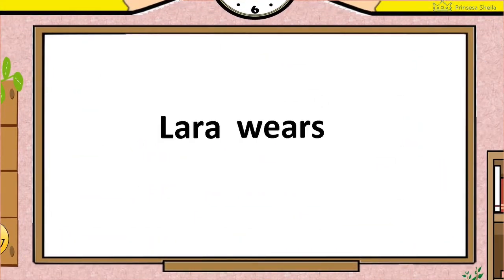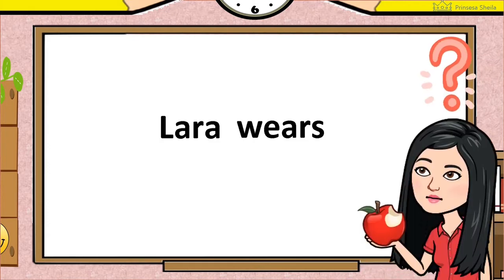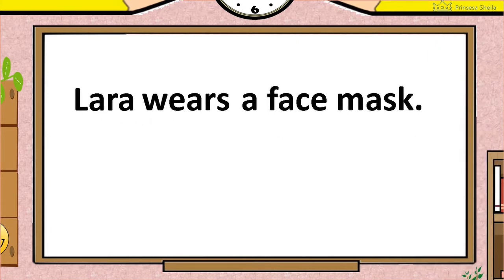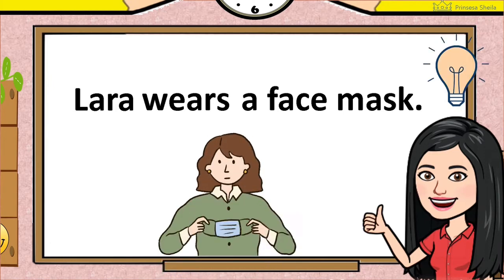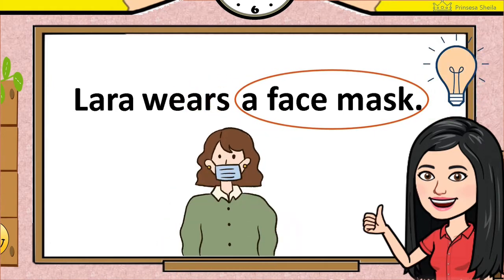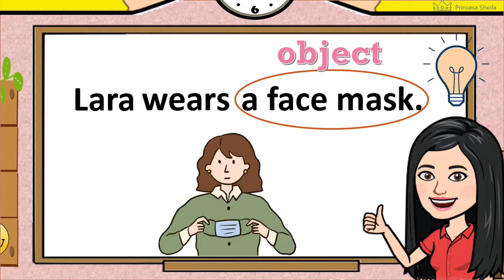Take a look at this. Lara wears. Is the thought complete? No. There is something missing. What do you think is she wearing? But if we added more details—a face mask—the thought would become complete. Lara wears a face mask. The detail that we added is what we call object.